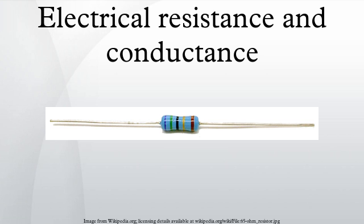In the hydraulic analogy, current flowing through a wire is like water flowing through a pipe, and the voltage drop across the wire is like the pressure drop that pushes water through the pipe. Conductance is proportional to how much flow occurs for a given pressure, and resistance is proportional to how much pressure is required to achieve a given flow. The voltage drop, not the voltage itself, provides the driving force pushing current through a resistor. In hydraulics it is similar — the pressure difference between two sides of a pipe, not the pressure itself, determines the flow through it.